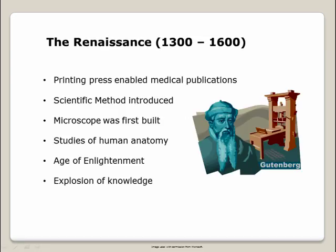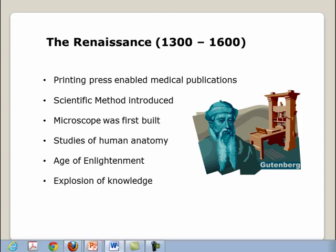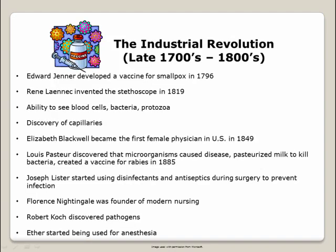The Renaissance, 1300–1600. The printing press was invented by Johann Gutenberg during this time period. The scientific method was introduced during the Renaissance. It was also during this time that the first microscope was built and studies of human anatomy were the focus. This time was known as the Age of Enlightenment due to the explosion of knowledge that occurred.